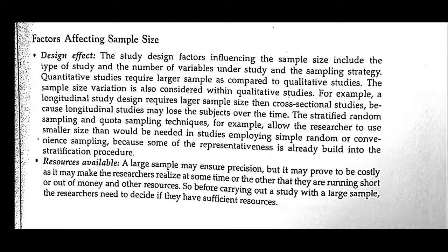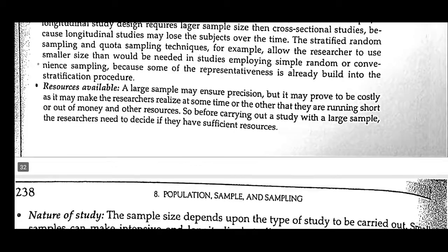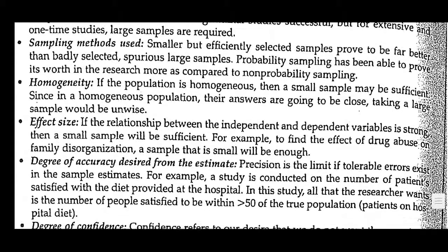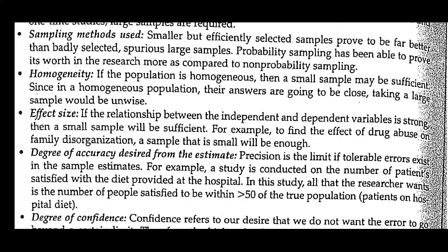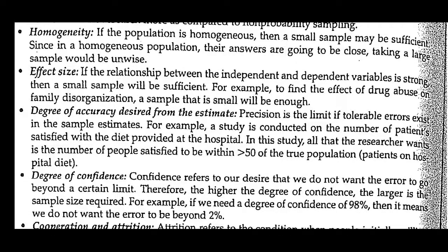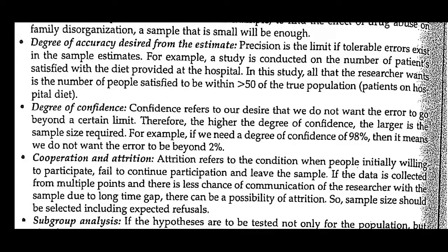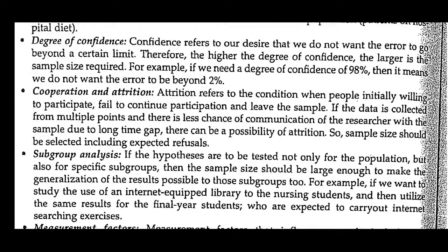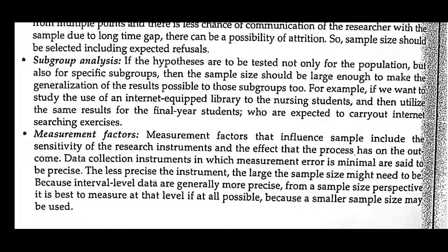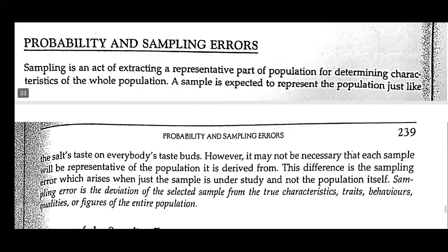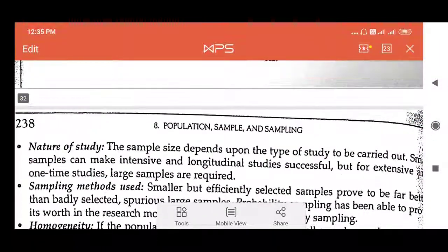In summary, the factors that may affect sample size are: design effect (quantitative needs more samples, qualitative needs fewer), resources (money and budget), nature of the study, sampling method used (probability is more effective than non-probability), homogeneity (small samples sufficient for homogeneous populations; heterogeneous requires more), effect size, degree of accuracy, degree of confidence, cooperation and attrition, subgroup analysis, and measurement factors related to the instrument. Thank you students.